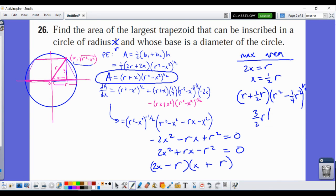So we get 3/2 r times (3/4 r²)^(1/2). And so I think that gives us 3√3/4 r² as our max area.